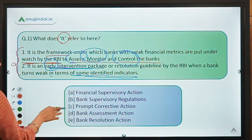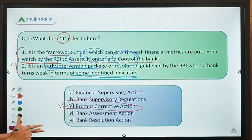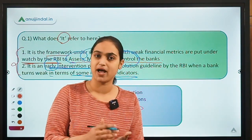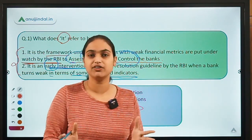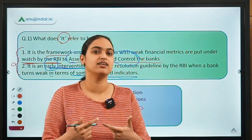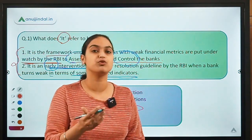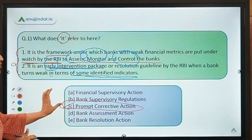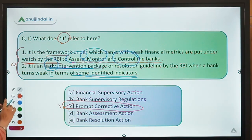The answer to this question is option C. The concept is clear — banks must adhere to standards set by RBI, and if they are not adhering to those standards it means their performance is in a risky area. Actions will then be taken to improve their performance.